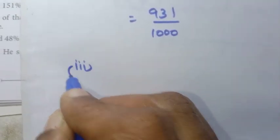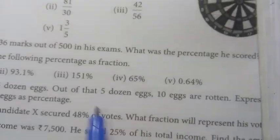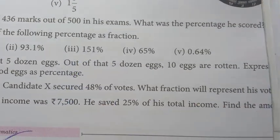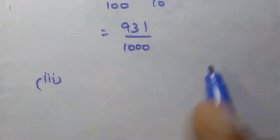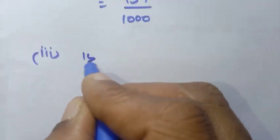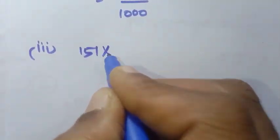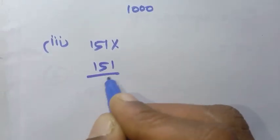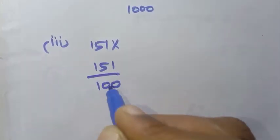Third sum: 151 percentage. So, 151 percentage is written as 151 by 100.